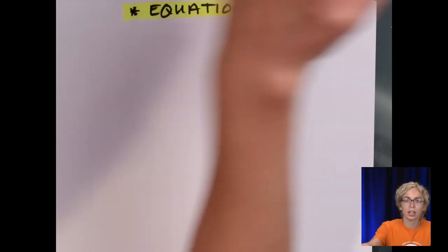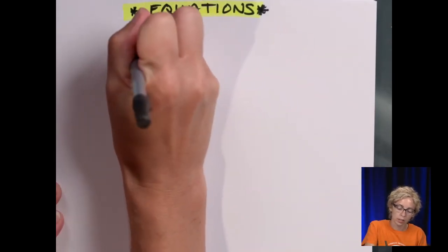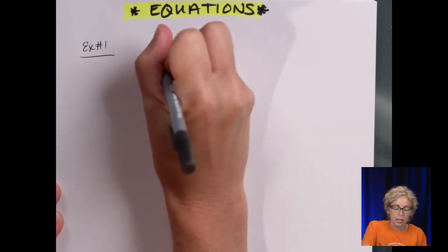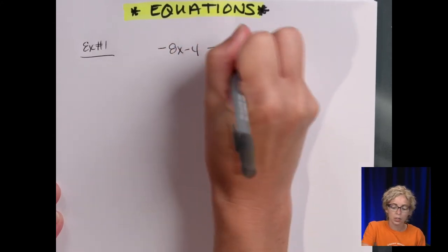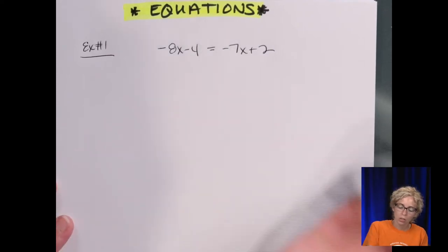So the first example we're going to take a look at is just solving a basic equation. The equation for example number one is -8x - 4 = -7x + 2. Now remember when solving an equation, you always want to perform the inverse operations in order to isolate x. And I like to have, if possible, my x's be positive.